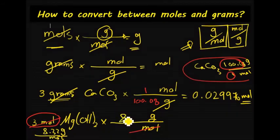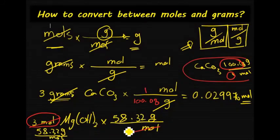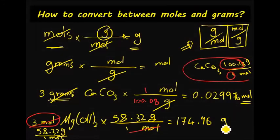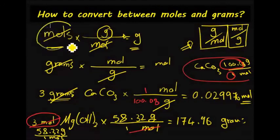So I put 58.32 grams on the numerator and 1 mole on the denominator. Moles will cancel out. Multiplying 3 by 58.32 gives you 174.96 grams of magnesium hydroxide.